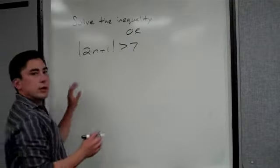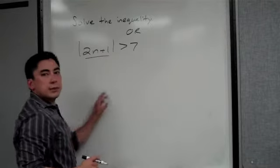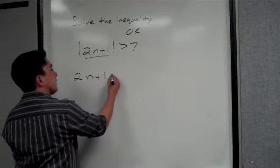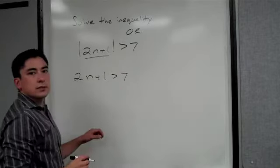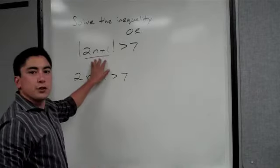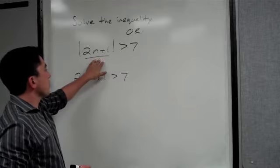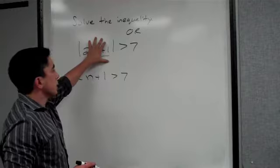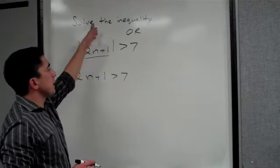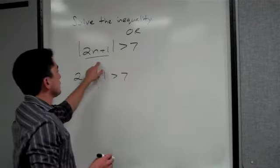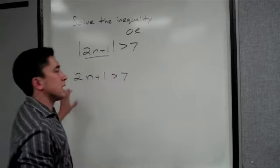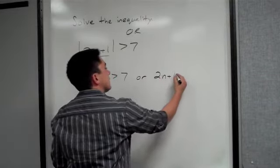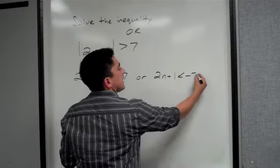Because if you think about it, this right here has to be greater than 7. Has to be greater than 7. Now, as you go further and further negative, once it hits negative 8, if this were to equal negative 8, then when you take the absolute value you get a positive 8 which is greater than 7. So not only does this have to be greater than 7, but this also can be less than negative 7.